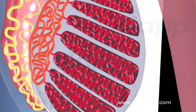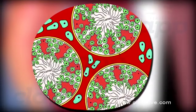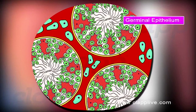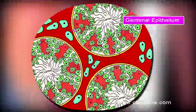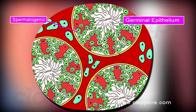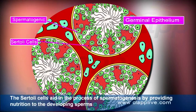These tubules are lined inside by germinal epithelium, which consists of two types of cells: cuboidal cells called spermatogonia and pyramidal cells called Sertoli cells or nurse cells. Spermatogonia, or sperm mother cells, produce sperms. Sertoli cells aid in the process of spermatogenesis by providing nutrition to the developing sperms.